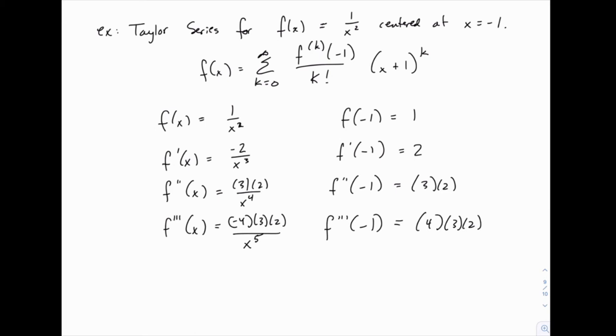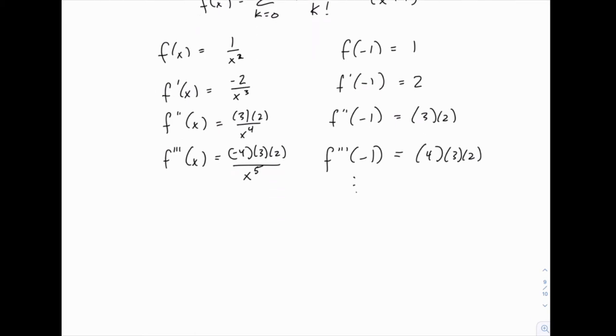So you can keep doing this if you need to, but it looks like the pattern that's emerging is again a factorial. So the kth derivative at -1 is going to be a factorial, but notice carefully...